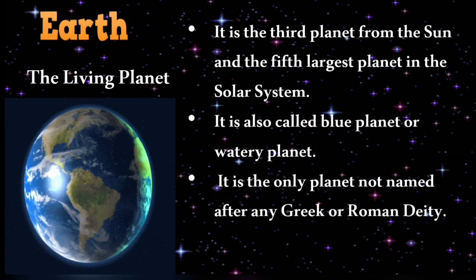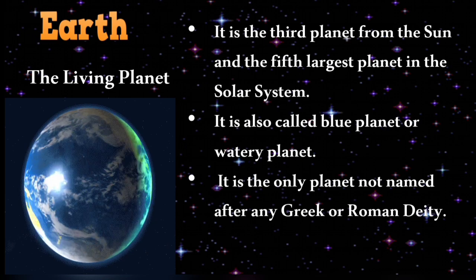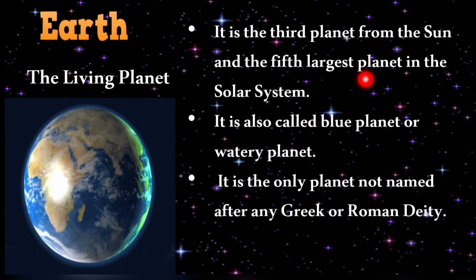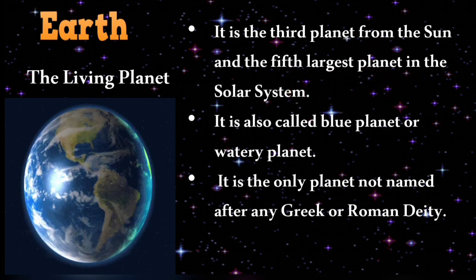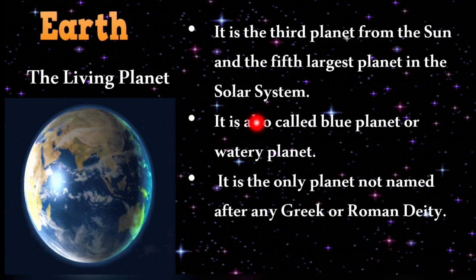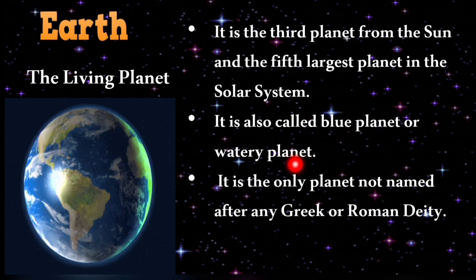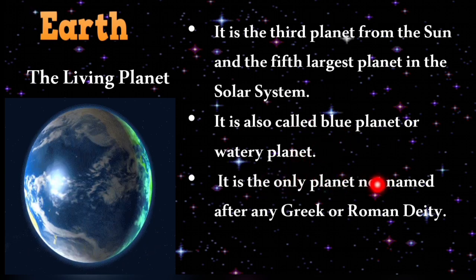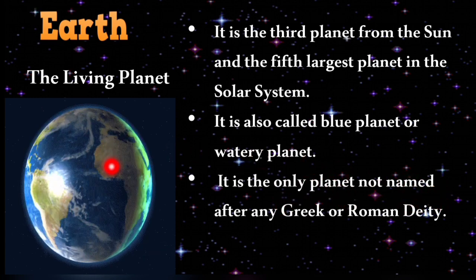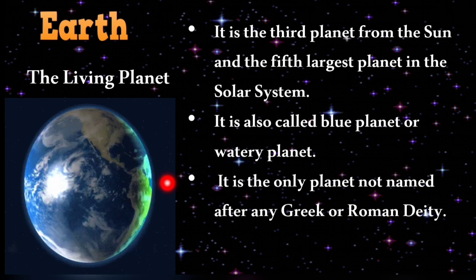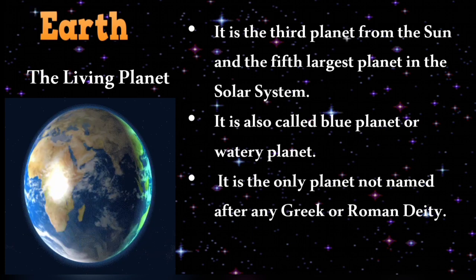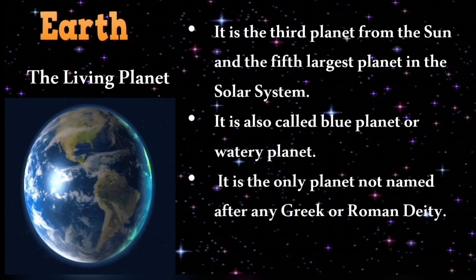Earth is also called the living planet. It is the third planet from the sun and the fifth largest planet in the solar system. It is also called the blue planet or watery planet, and it is the only planet not named after any Greek or Roman deity.